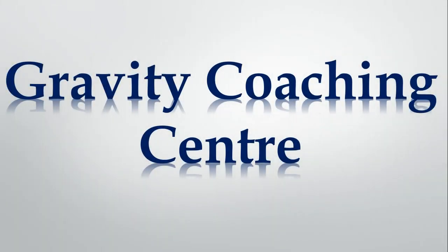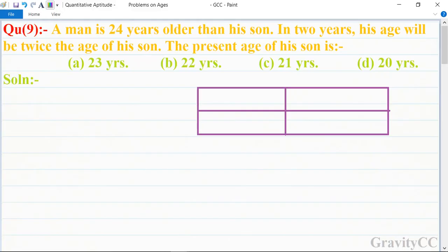Welcome to our channel, Gravity Coaching Center, quantitative aptitude chapter on problems on ages. Question number nine: A man is 24 years older than his son. In two years, his age will be twice the age of his son.